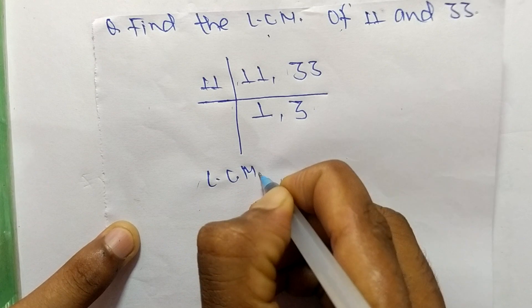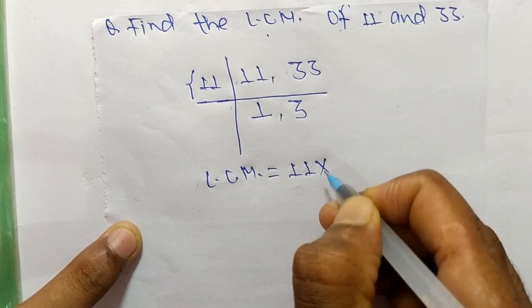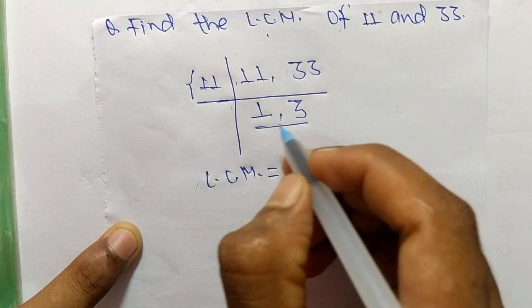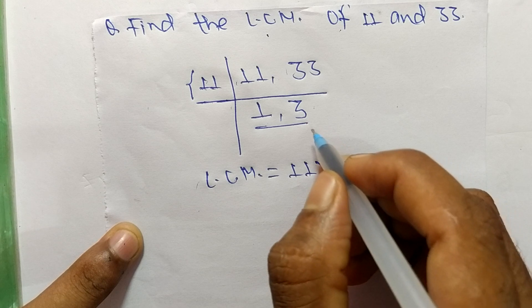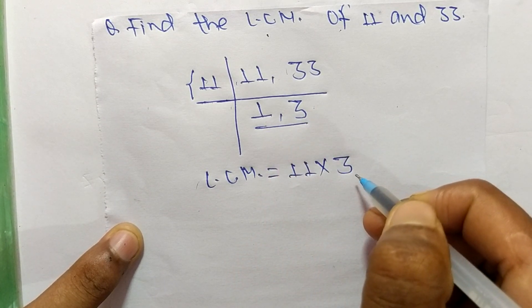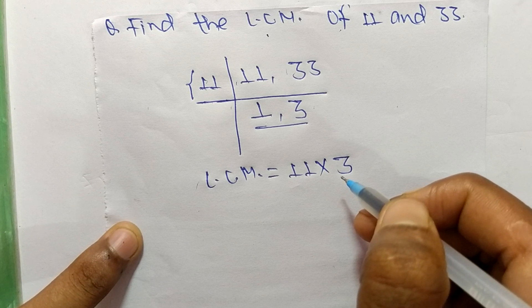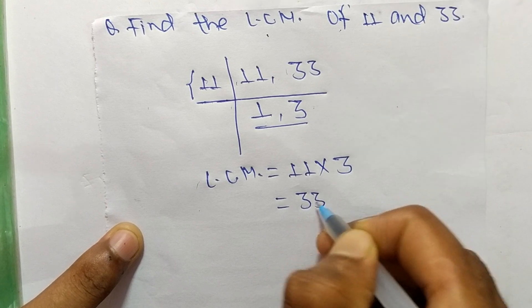So the LCM is equal to 11 from this part and from this part we have 1 and 3, but we take here only 3. We neglect 1 because multiplying any number with 1 we get the same result. So 11 times 3 equals 33.